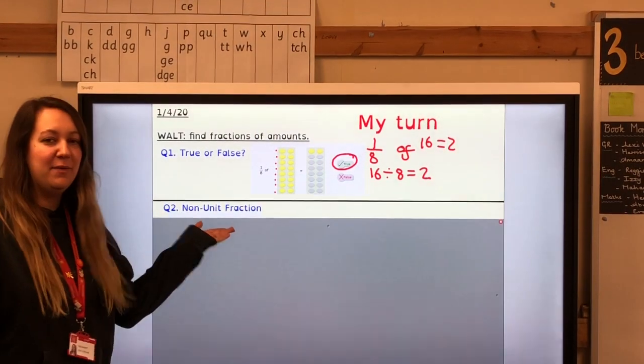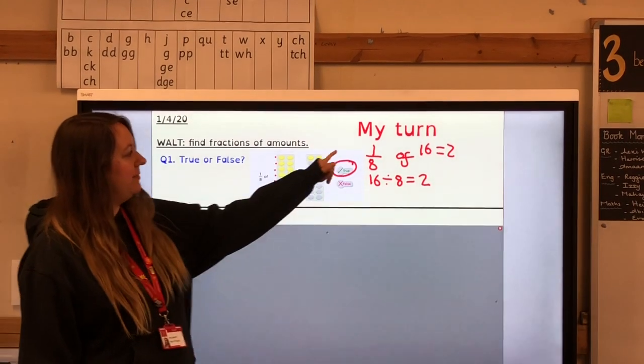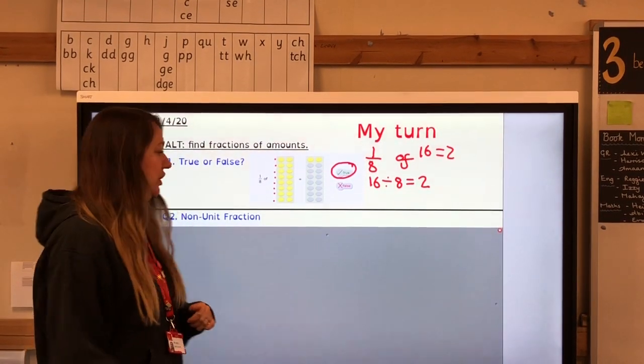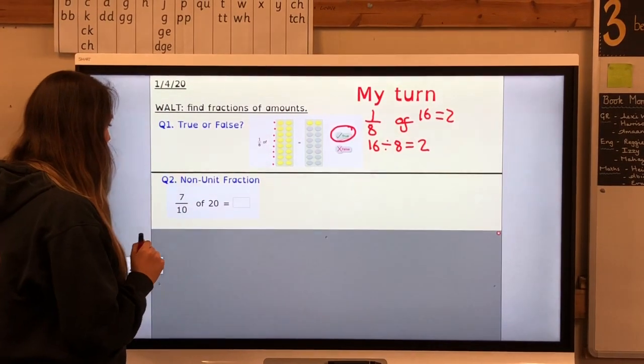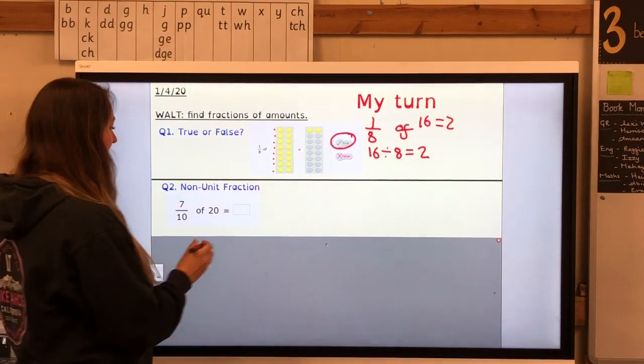Question 2 now involves non-unit fractions and this is where you have something that is not a 1 as the numerator. So a little bit more tricky but I know you can do this. We are trying to find seven-tenths of 20.